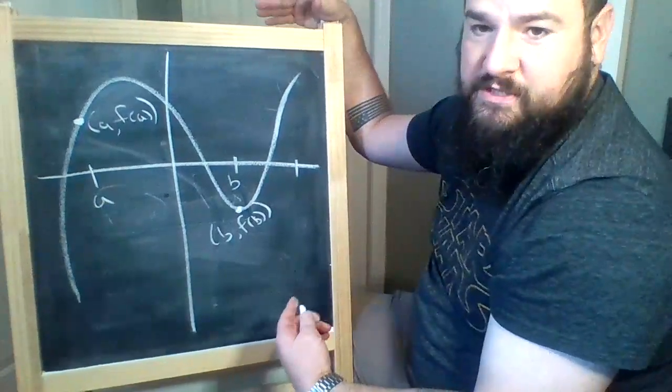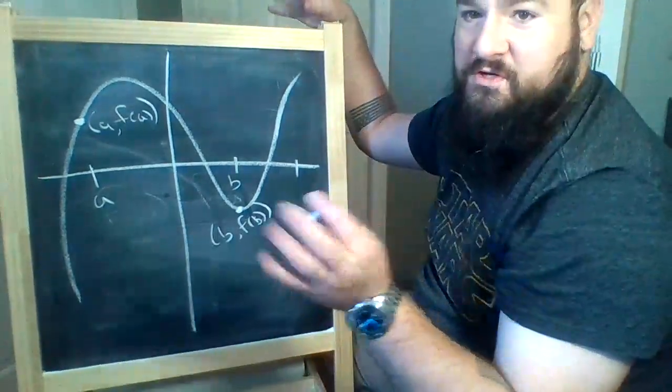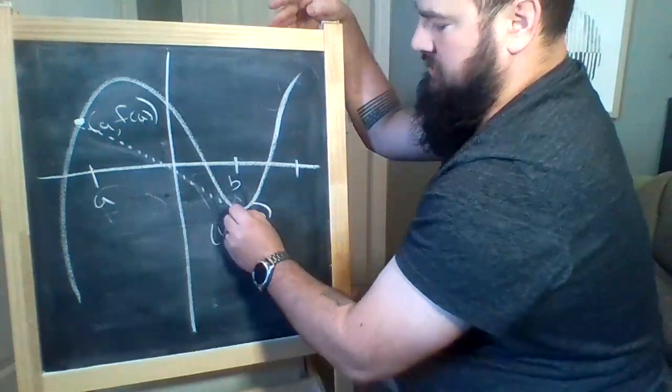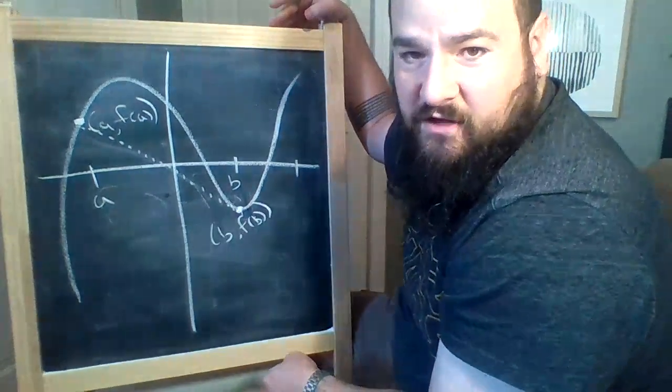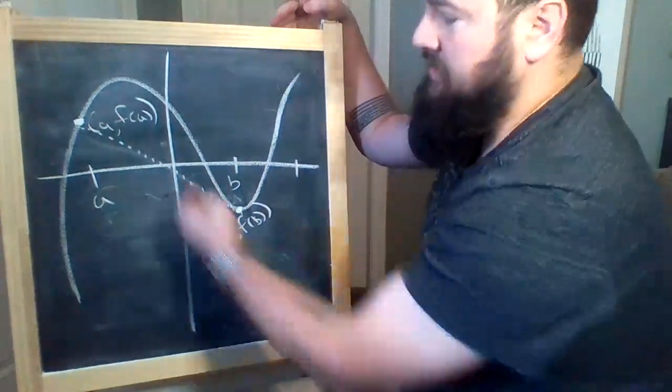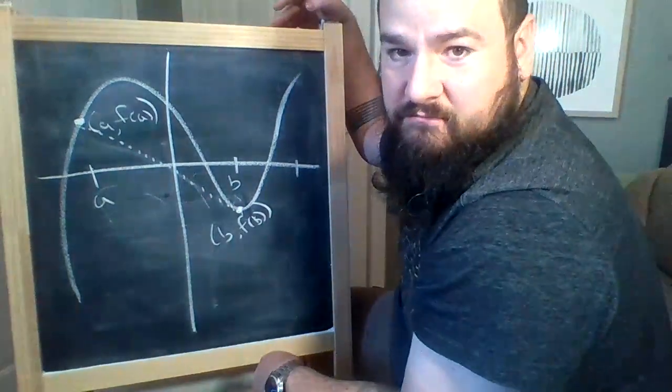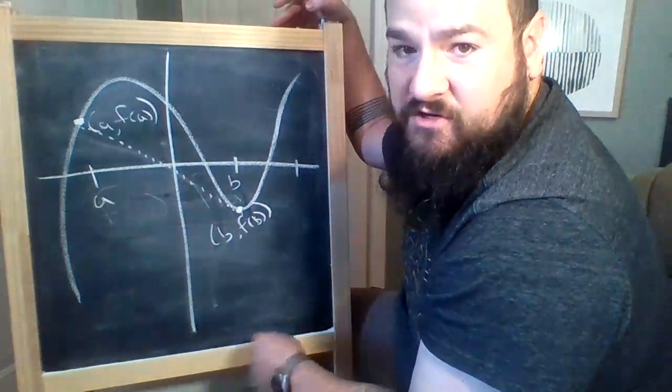So what we're doing here with average rate of change, all we're doing is we are finding the slope of that dotted line. That's it. So we have our two points on that dotted line, and we find the slope between them. That's all average rate of change is.